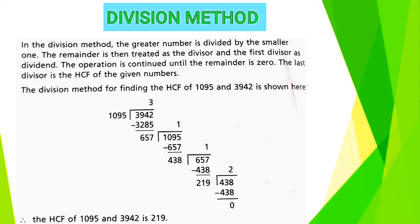So 657 once is 657, and 657 is subtracted from 1095, so remainder is 438. And 438 once is 438, and it is subtracted from 657, so remainder is 219.